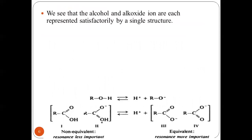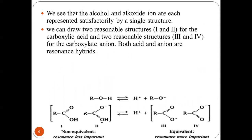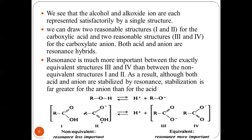We see that an alcohol and an alkoxide ion are each represented satisfactorily by a single structure. We can draw two reasonable structures for carboxylic acids and two for the carboxylate ion — both acid and anion are resonance hybrids. Resonance is much more important between the exactly equivalent structures three and four than between non-equivalent structures one and two. Therefore, although both acid and anion are stabilized by resonance, stabilization is far greater for the anion than for the acid. As the anion is more stable, the equilibrium shifts to the right, producing more H⁺ ions and hence a stronger acid.